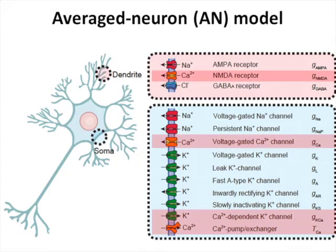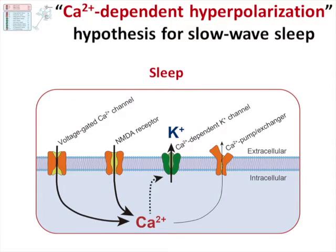Using the average neuron model, we predicted which currents or ion flows within a neuron are critical for maintaining the type of neural activity associated with slow-wave sleep — the phase of deep sleep which we were investigating. Our computational model predicted that the calcium ion-dependent hyperpolarization pathway played an important role in the transition between being asleep and awake.